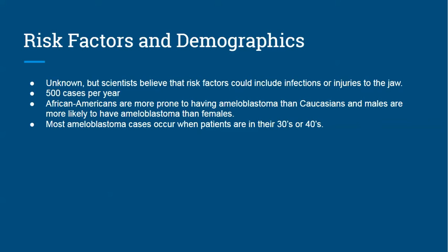Ameloblastoma is approximated to affect about 500 cases per year. Although every person has approximately the same baseline chance of being diagnosed, some groups are more likely to be affected. African Americans are more prone to ameloblastoma than Caucasians, and males are more likely to have it than females. Most cases occur when patients are in their 30s or 40s; however, the median age of female patients is significantly lower than that of male patients.